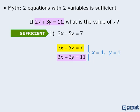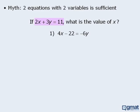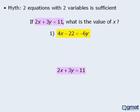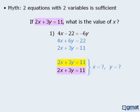However, this is not always the case. Consider this example — we are given one equation with two variables, and statement 1 provides a second equation with two variables. Do we have enough information? The answer is no. If we take the equation from statement 1 and rearrange the terms, then divide both sides by two, we see that our second equation is identical to the equation we were given. So while we may have two equations with two variables, the two equations are essentially identical. As such, we cannot solve for x and y, and statement 1 is not sufficient. Watch out for situations where two equations are essentially identical to one another.